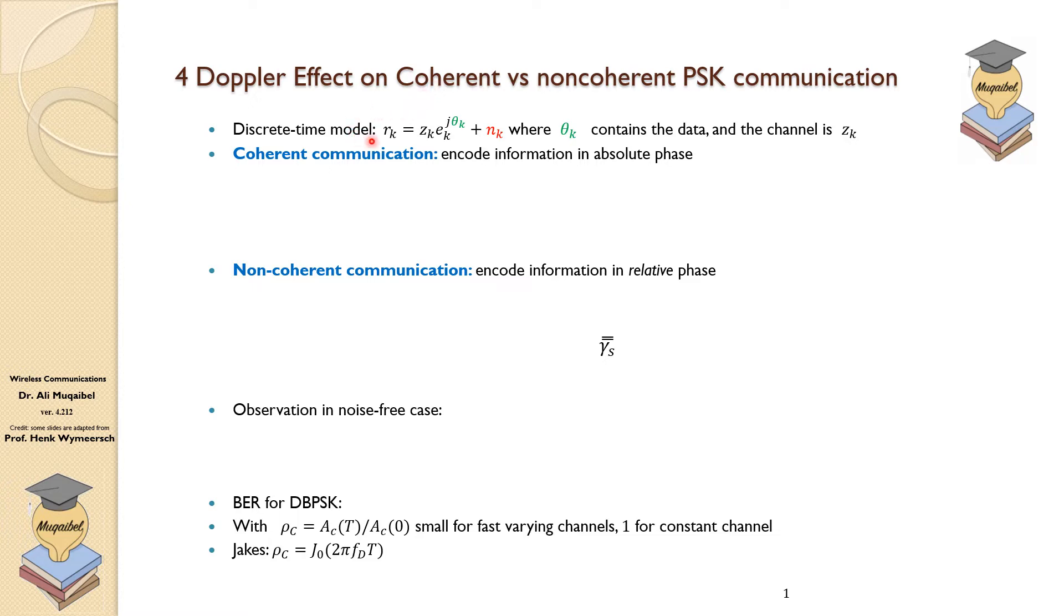If you look at the discrete model, the received signal is made of the impact of the channel on the data plus noise. Because you are using PSK, this phase contains the data, shown in green here. Our channel is referred to as Z_k, so the channel will scale the received signal. This is in general a complex number. So we have a magnitude and phase which affect the data set.